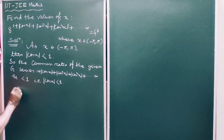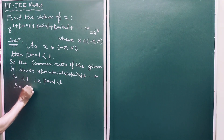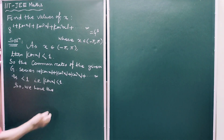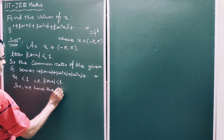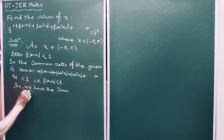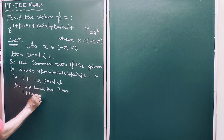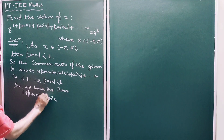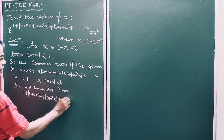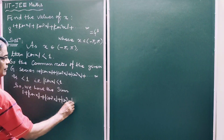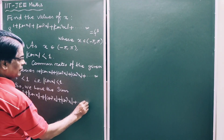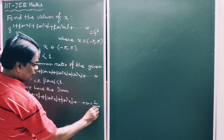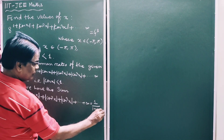So we have the sum: 1 plus |cos x| plus |cos²x| plus |cos³x| plus up to infinity, which is equal to 1 divided by 1 minus |cos x|. This is the standard formula for the sum of an infinite geometric series with first term 1 and common ratio |cos x|.